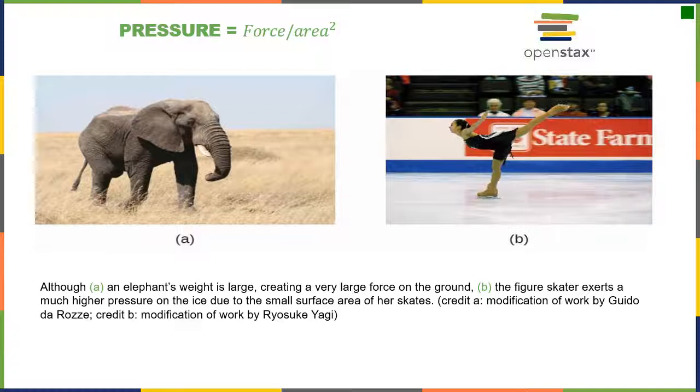Looking at an elephant's foot, which has a very large surface area, it has a pretty large force. An ice skater has a smaller force, but much higher pressure because the ice skate blade has a very fine point. Because the area is very small, the ice skater actually exerts higher pressure on the ground than an elephant. Force per unit area.